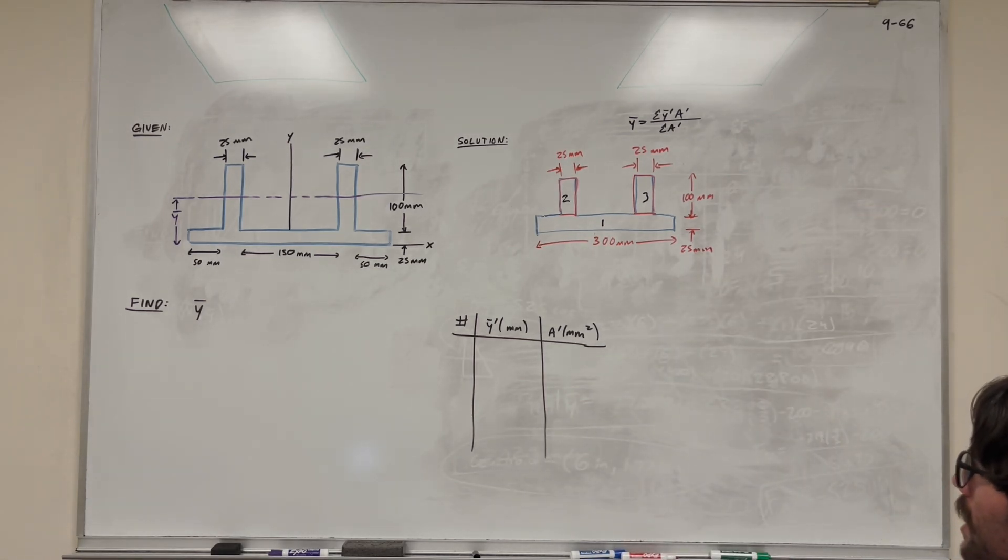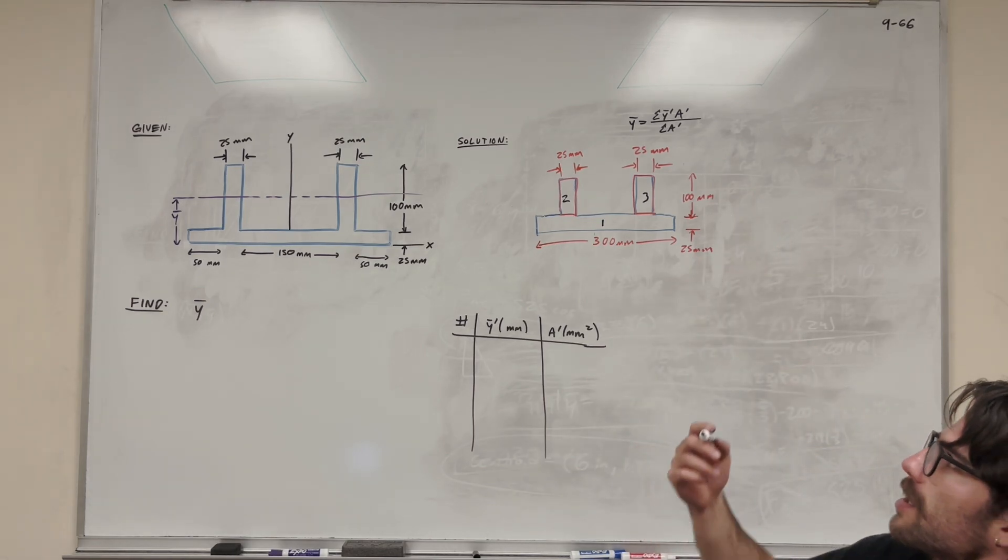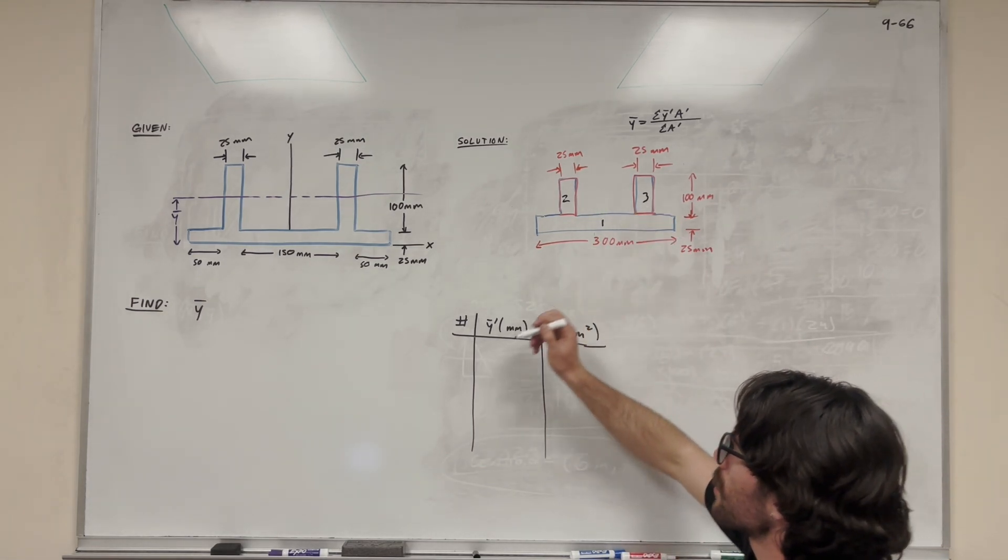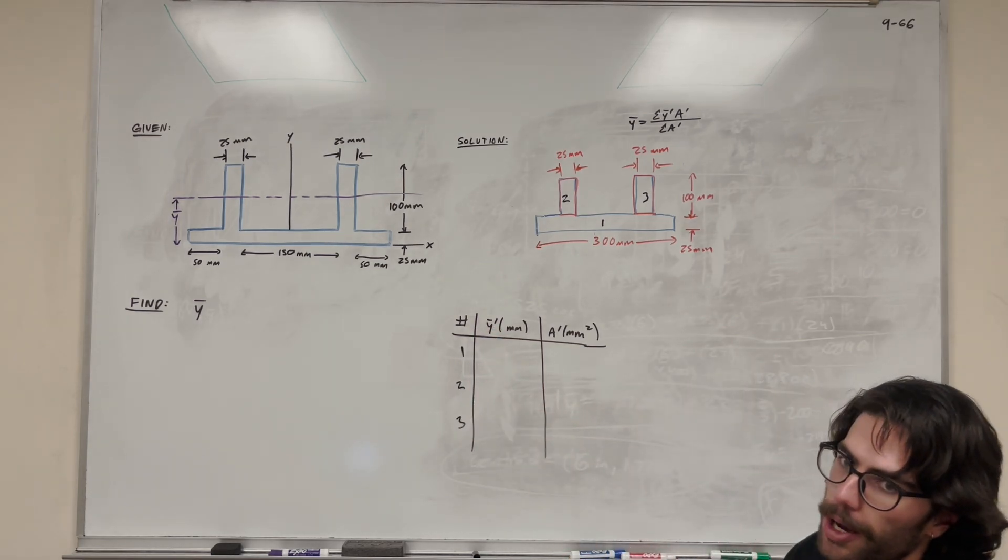So the equation here, we need to find two things. We need to find y bar prime and area prime, which the prime just says it's for each of the three shapes here. So we have one, two, three shapes, so we need to find y bar for each of them.